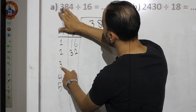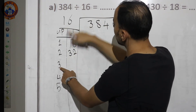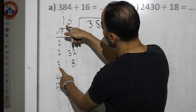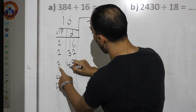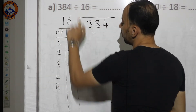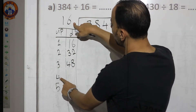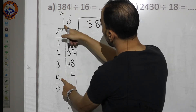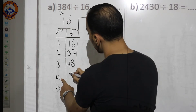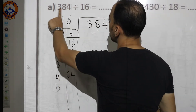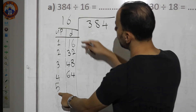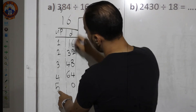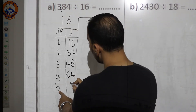16×3: 3×6=18, put 8 carry 1; 3×1=3 plus 1 equals 4 — so 48. 16×4: 4×6=24, put 4 carry 2; 4×1=4 plus 2 equals 6 — so 64. 16×5: 5×6=30, put 0 carry 3; 5×1=5 plus 3 equals 8 — so 80.